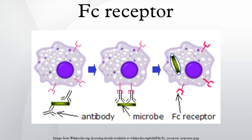FC receptors on mast cells: IgE antibodies bind antigens of allergens. These allergen-bound IgE molecules interact with FcεRI receptors on the surface of mast cells. Activation of mast cells following engagement of FcεRI results in a process called degranulation, whereby the mast cell releases preformed molecules from its cytoplasmic granules. These are a mixture of compounds including histamine, proteoglycans, and serine proteases.